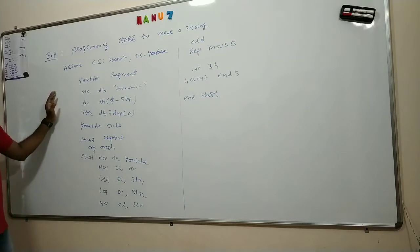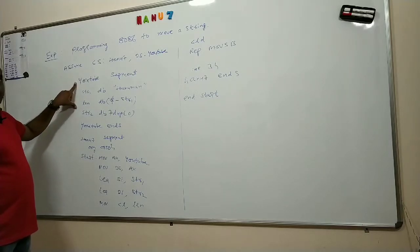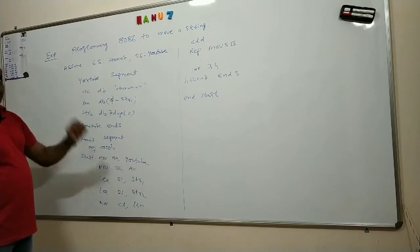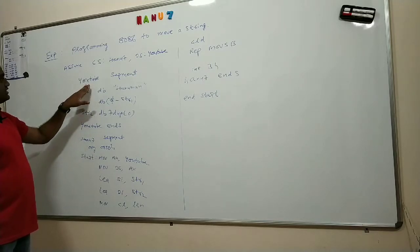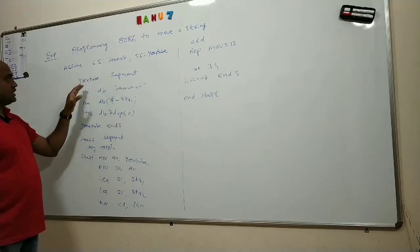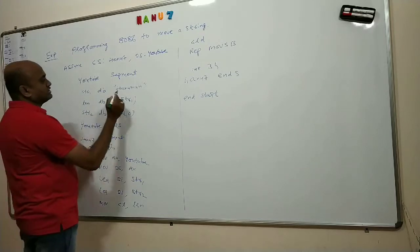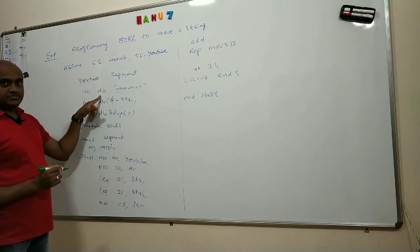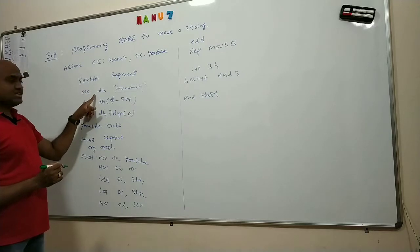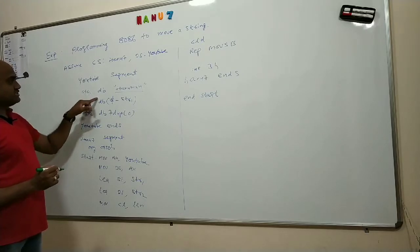In order to move a string from one segment to another segment, we have to first define the input string. So create a data segment and define your input string. I have created my data segment with name U2. I have opened a segment with name U2, then I define my input string. My input string is Hanuman. I am indicating that this string is of byte size and I am using a variable name str1. So I define my input string like this: str1 db Hanuman.